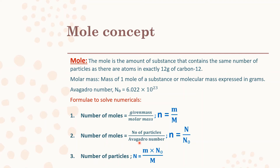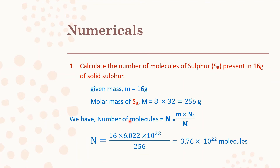The number of moles can also be expressed in terms of Avogadro's number. The number of particles present in one mole of any substance is a fixed value given by scientist Avogadro: 6.022 × 10²³. If the number of moles is 1, the number of particles equals Avogadro's number. Therefore, one mole of any substance contains 6.022 × 10²³ particles — whether ions, atoms, or molecules. From these two equations, a third equation is derived for solving numericals.